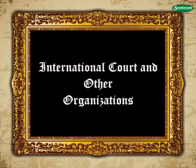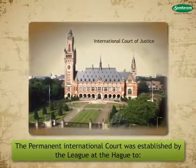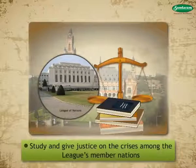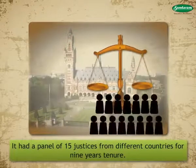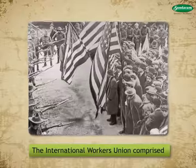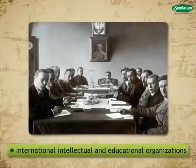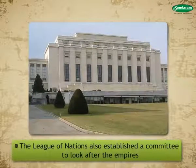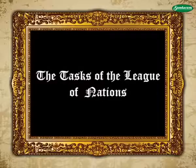The permanent International Court was established by the League at The Hague to provide legal advice to the League of Nations and to study and give justice on the crisis among the League's member nations. It had a panel of 15 justices from different countries for a 9-year tenure. The International Workers Union comprised international workers organizations, international intellectual and educational organizations, and economic committees. The League of Nations also established a committee to look after the empires of the defeated nations in the First World War.